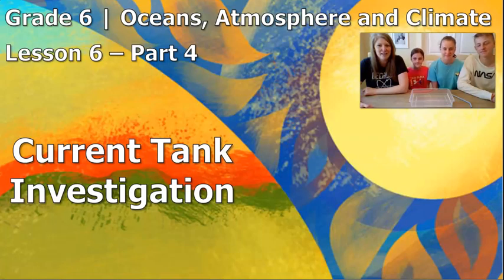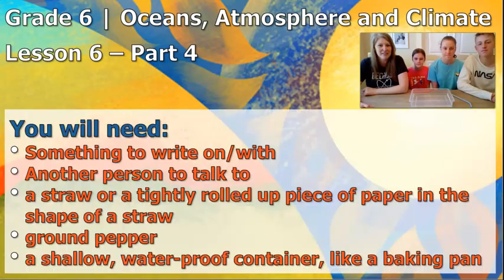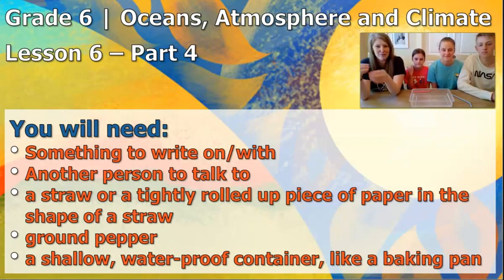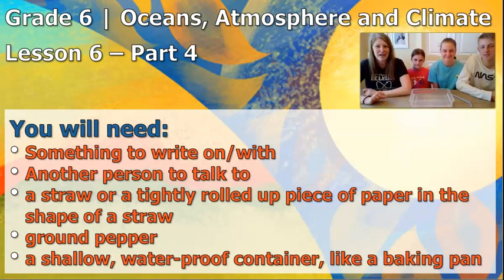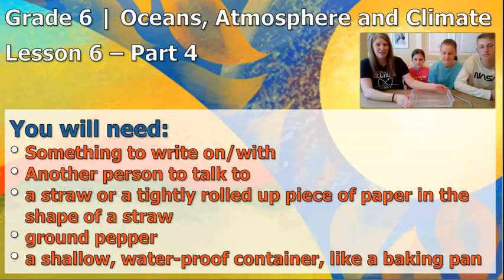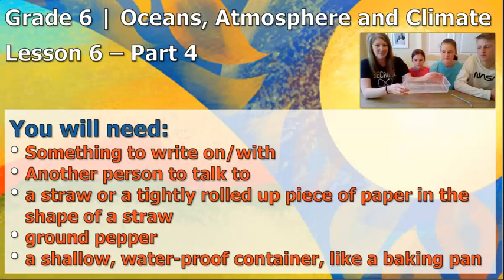To be successful, you're going to need a couple of things. You'll need something to write on, something to write with, someone to talk to, and you can also gather a few materials around your house for this activity: a straw. If you don't have a straw, you can tightly roll up a piece of paper and use it just like a straw. You also need ground pepper and a shallow waterproof container like a baking pan or a rectangular plastic tray. Anything like that would work great.